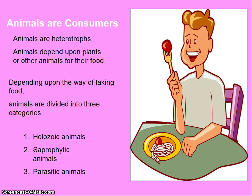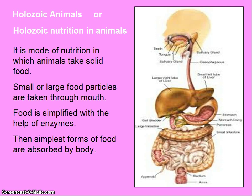Depending upon the way of taking food, animals are divided into three categories: holozoic animals, saprophytic animals, and parasitic animals. Holozoic nutrition is the mode of nutrition in which animals take solid food.